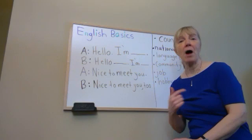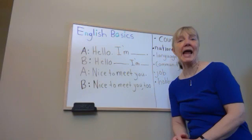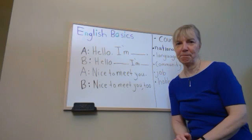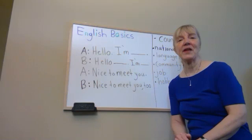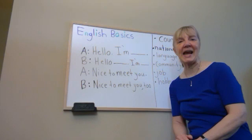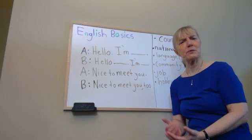So everyone has a first name. My first name is Katherine — that's K-A-T-H-R-Y-N. Some people have a middle name. My middle name is Louise — that's L-O-U-I-S-E. And everyone has a last name. My last name is Baker — B-A-K-E-R.